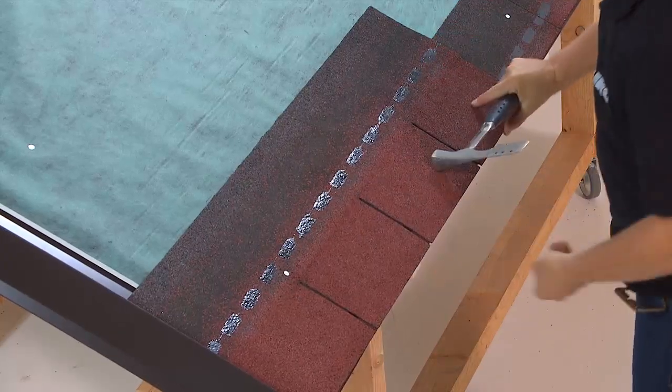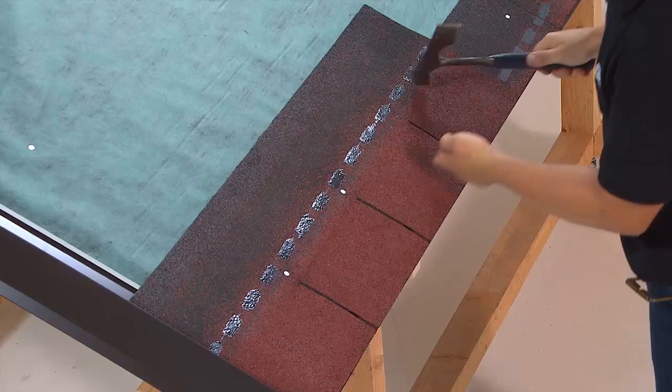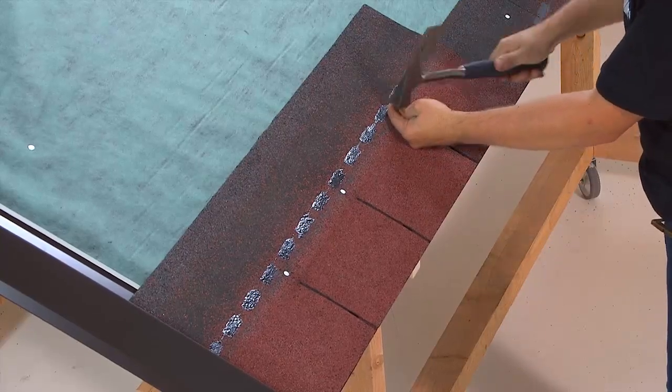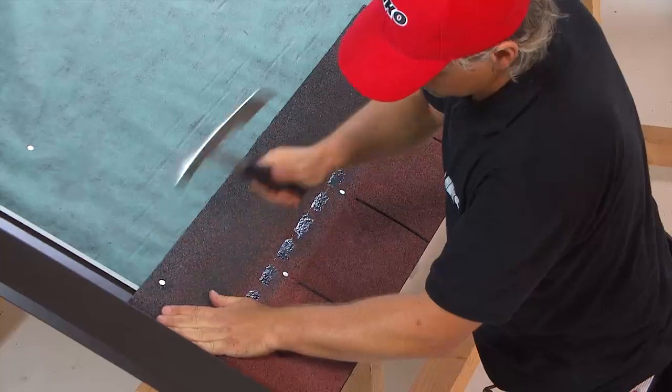Next, install the first row of shingles on the starter strip. The nails are now positioned 2.5 centimetres from the edge and 2.5 centimetres above the cutout.